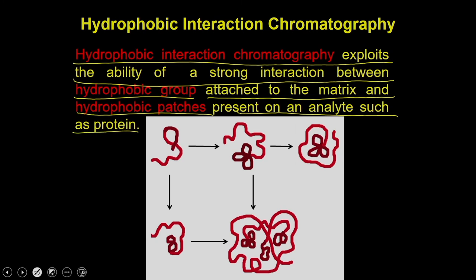How hydrophobic patches are placed in the protein: when the protein is synthesized as a single polypeptide chain, as soon as the polypeptide is released from the ribosome, it starts folding because of intramolecular interactions between amino acid side chains. The purpose of this folding is to protect the hydrophobic groups from the aqueous environment outside. The protein places all the hydrophobic groups within the core and keeps hydrophilic amino acids on the outside, maintaining a hydrophobic environment in the center.